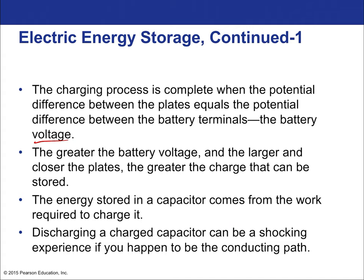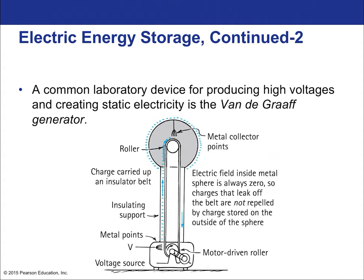The Van de Graaff generator is a common laboratory device for producing high voltages and creating static electricity. It uses a motor and mechanical energy via friction to convert that mechanical energy into electrical potential energy on the surface of a conducting metal sphere. That concludes our introduction to electrostatics—covering charge definitions, how charges interact, Coulomb's Law, field, potential, and capacitors. Thank you for watching.